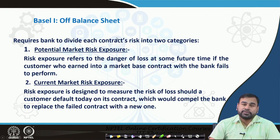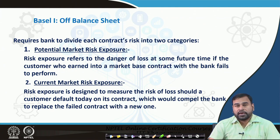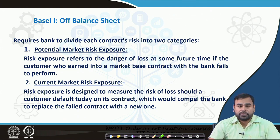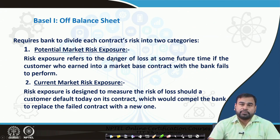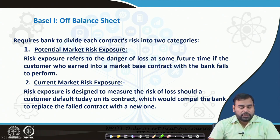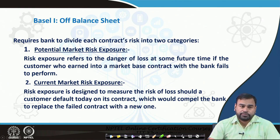For off-balance sheet items, there are two components. When a bank has commitments, guarantees, or letters of credit, it is exposed to certain credit risk. The contract risk is divided into two categories: potential market risk exposure and current market risk exposure. Potential risk exposure refers to the danger of loss at some future time if the customer who entered into a market-based contract with the bank fails to perform.